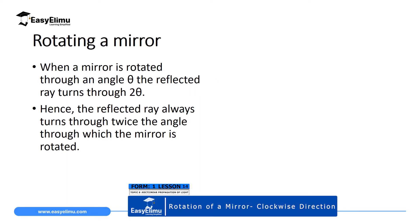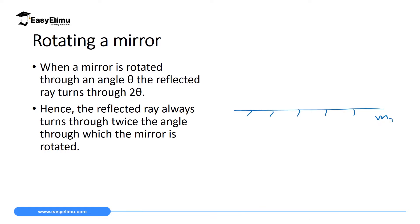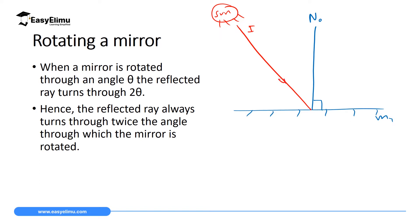If you have a mirror, call it M1, it's horizontal, and on this horizontal mirror we have a normal line which is 90 degrees to this mirror. Then if we have a source of light which gives us an incident ray i, this incident ray forms an angle of incidence with the normal. When this incident ray hits the point of incidence on the mirror, it will be reflected, giving us reflected ray R-naught, and the angle of reflection r equals the angle of incidence i.